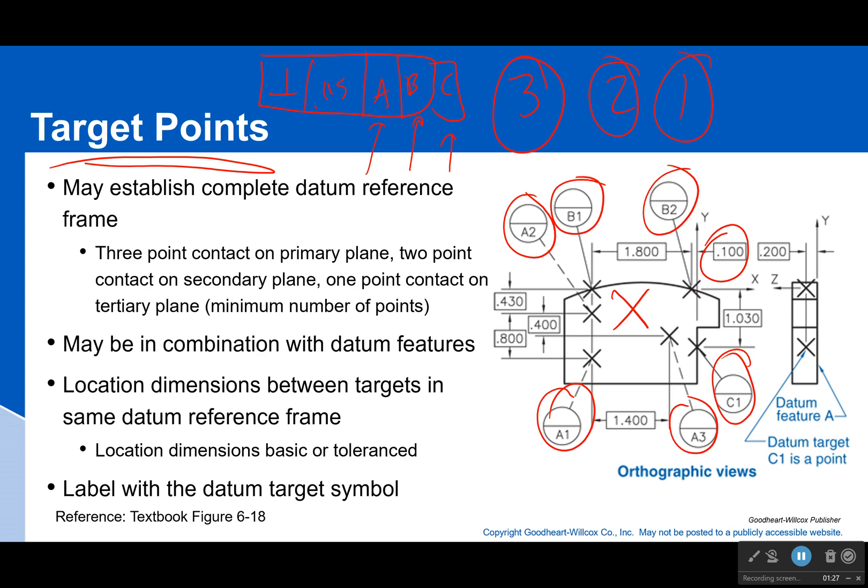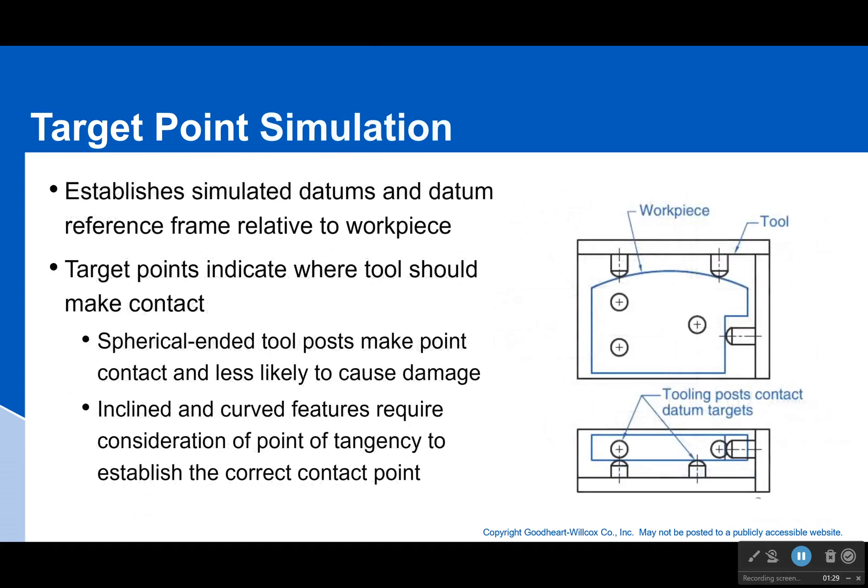And once you've done that, you label it with the datum target symbol. Now how does this actually look? Well, if you're trying to simulate these datums, as a note, these three little points you see right here, those are pegs with a dome top. You see them from the side right here. So all these are just little pegs that have a domed top, and that is how you simulate a target point—at least it's one way you can do it.